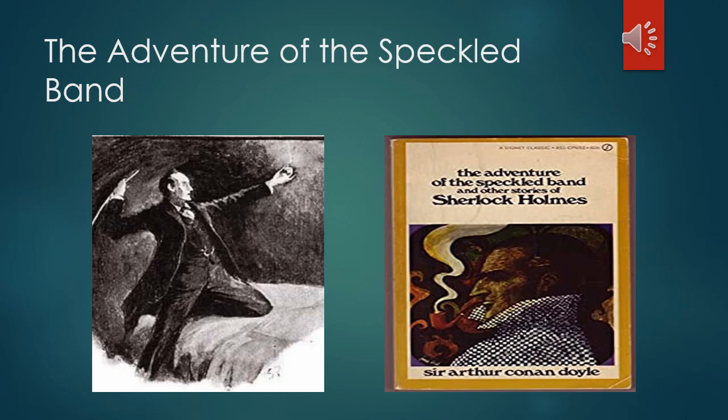The story tells of Helen Stoner, a soon-to-be-married young woman who suspects her stepfather may be trying to kill her in order to retain control of her inheritance. Convinced of her stepfather's intentions, she turns to Holmes for help. The Adventure of the Speckled Band is a classic locked-room mystery that deals with the themes of parental greed and inheritance.